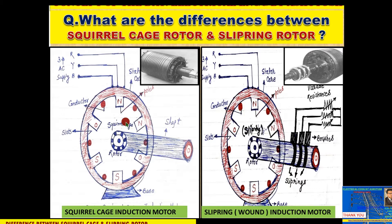The name of the induction motor is based upon the type of rotor that is connected. For example, if a squirrel cage rotor is used in this type of motor, then this motor will be called a squirrel cage three-phase induction motor.